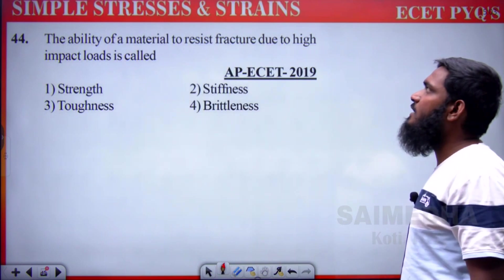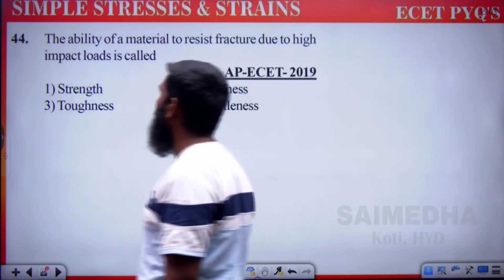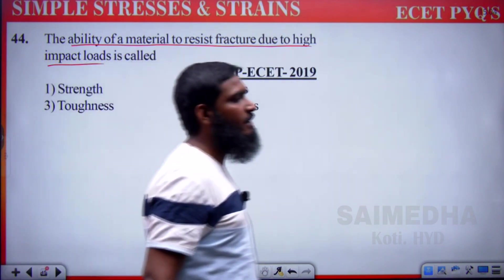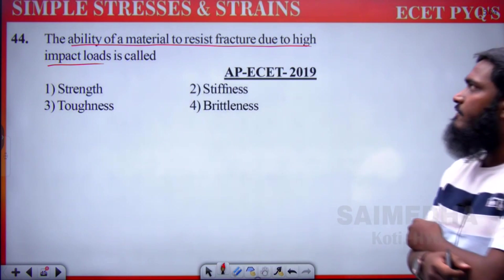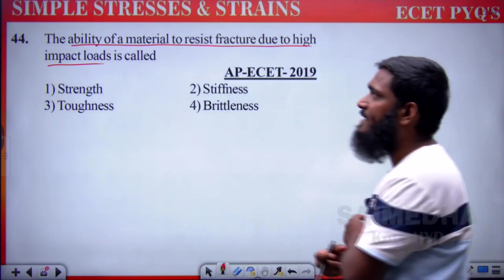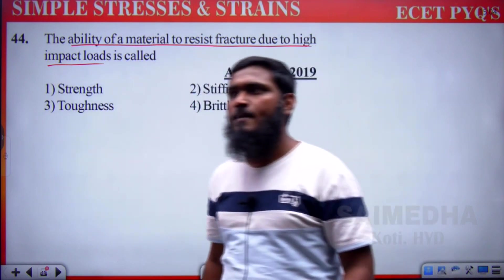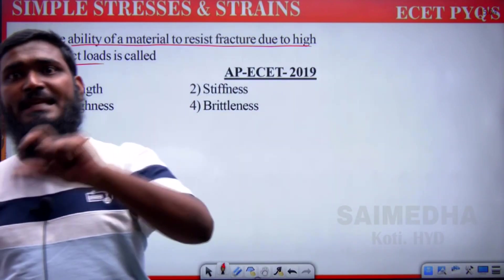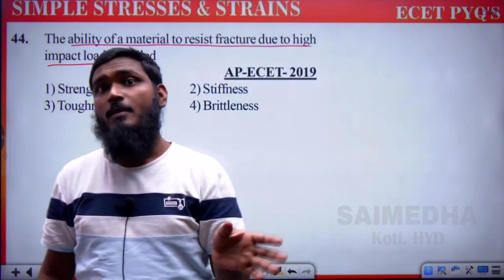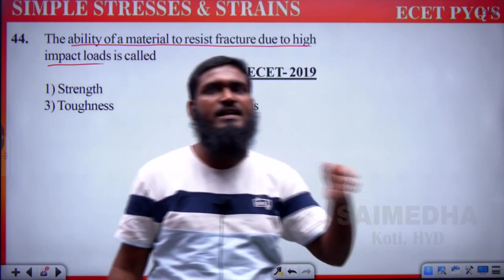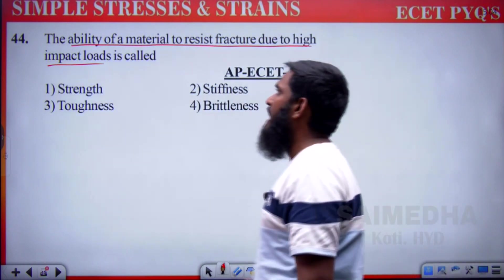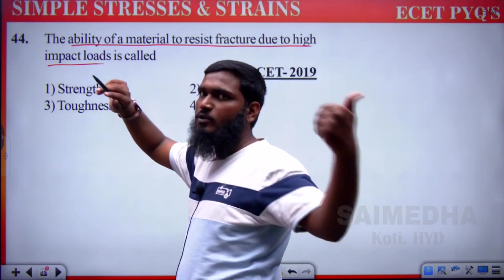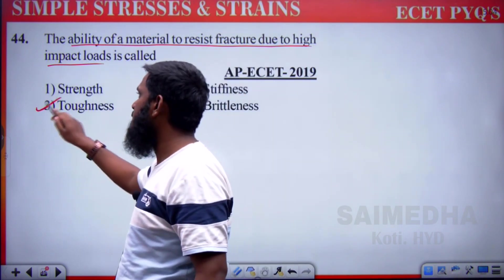The ability of a material to resist fracture due to high impact loads is called toughness. Energy absorbed within elastic limit = resilience; energy absorbed up to fracture point = toughness. Option 3 is correct.